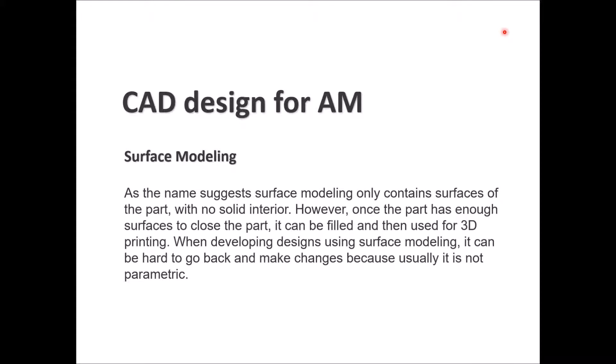Surface modeling contains only surfaces — there is no solid interior, it is a hollow shell. However, when enough surfaces close the part with no open-ended curves, most CAD softwares give you the option to fill it and use it for 3D printing. A downside of surface modeling compared to solid modeling is that it is harder to go back and make changes, since surface modeling is not parametric — changing a certain curvature or line will not reflect on the whole assembly and may even break the closed design.